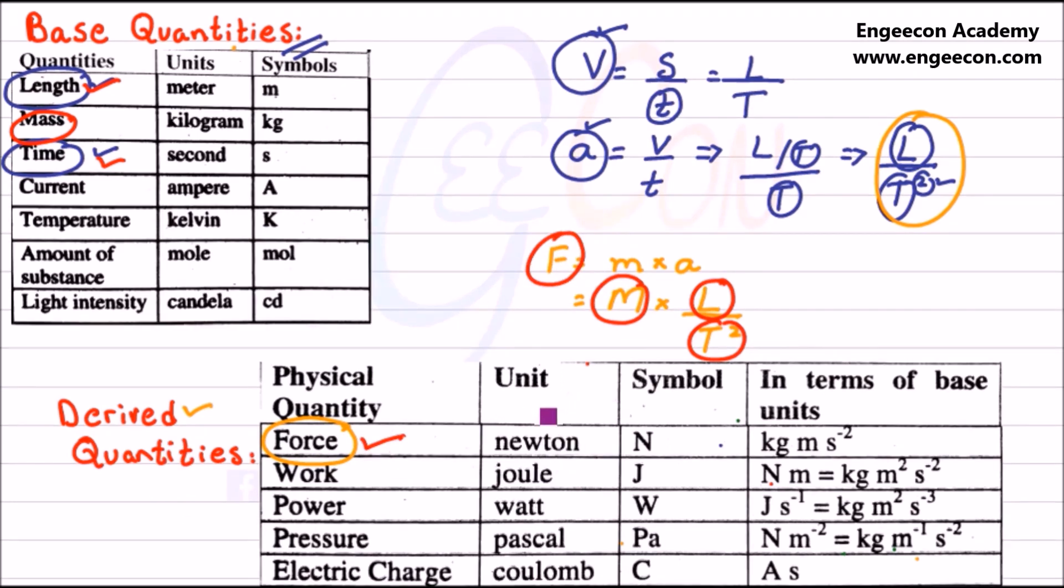Similarly, the derived units are derived from the base units. For example, meter, kilogram, second, ampere, kelvin, and mole are used to derive derived units. For example, Newton equals kilogram meter per second squared. Here we have kilogram, meter, and second are base units.